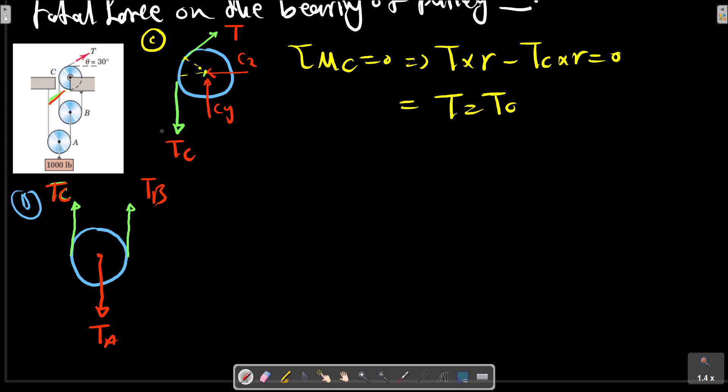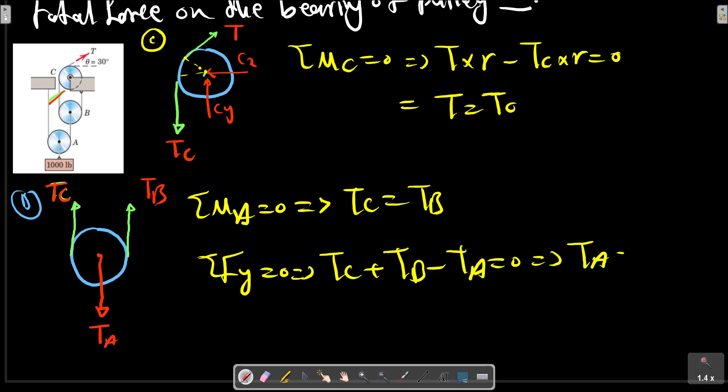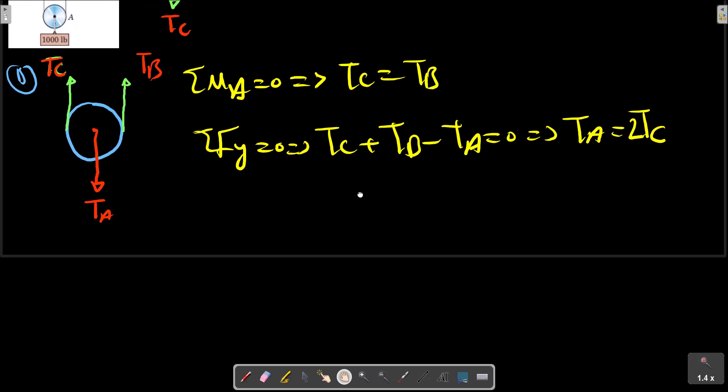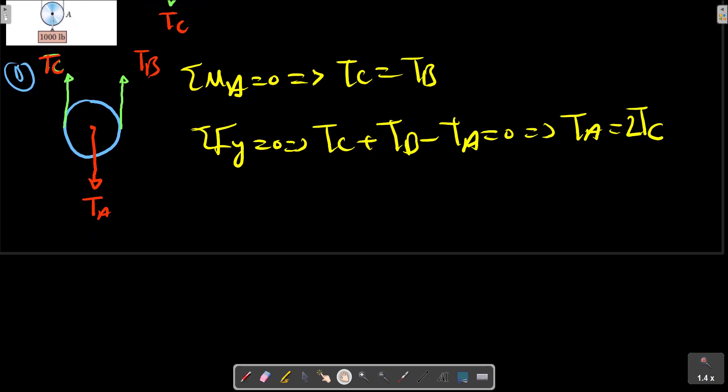Sigma Fy equals to zero. As a result, Tc equals to Tb. Sigma Fy equals zero: Tc plus Tb minus Ta equals zero. Ta equals 2Tc. Tc equals to T, so Ta equals to 2T.